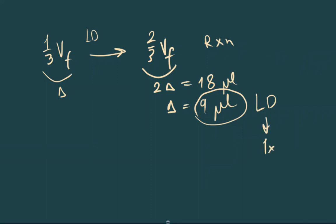And this is for your final volume. So we have 3 times 9 microliters, and it will be 27 microliters.